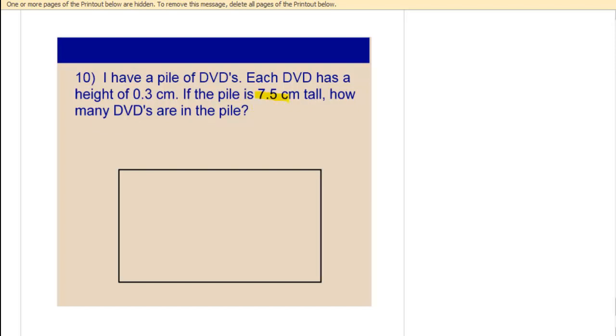Well, I know the total height of my pile of DVDs. I know the height of each DVD. And I'm trying to figure out how many DVDs there are. So here we have a total. We have the height of each individual thing in that total. And we want to know how many individual things there are. So what do you think? Which operation? This is division.